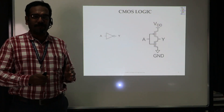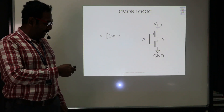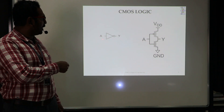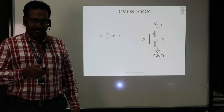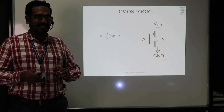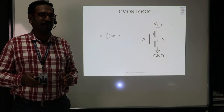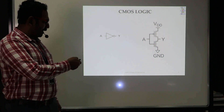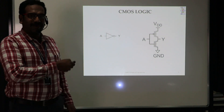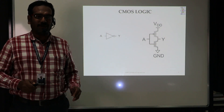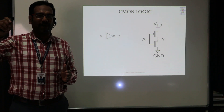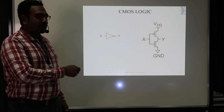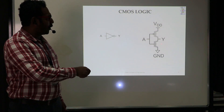Now I am going to explain the basic CMOS inverter. Here you can see the symbol of a CMOS inverter. If I give input A, it produces output Y. We know that an inverter complements the output — if we give 0, it produces 1; if we give 1, it produces 0. The structure for the CMOS inverter is shown here, with the PMOS network on top and NMOS on the bottom, which is why they are called the pull-up network and pull-down network.